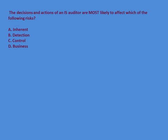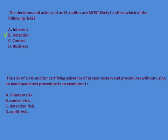One more question: the actions of an IS auditor are most likely to affect which of the following risks — inherent, detection, control, or business? Auditors' actions basically impact detection risk. Detection risk is the risk where the auditor fails to identify a material misstatement or error in the financial statement. Inherent risks are risks without any controls; control risks are risks where controls are in place but are not effective.